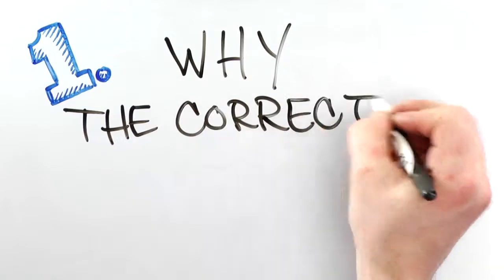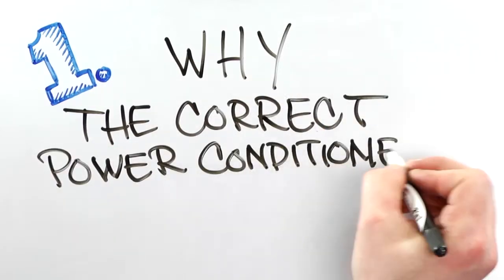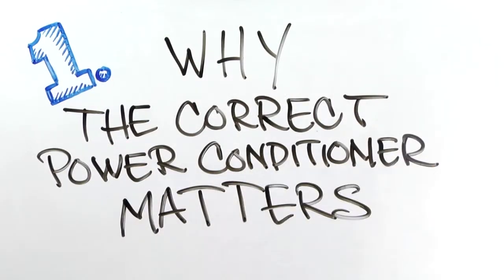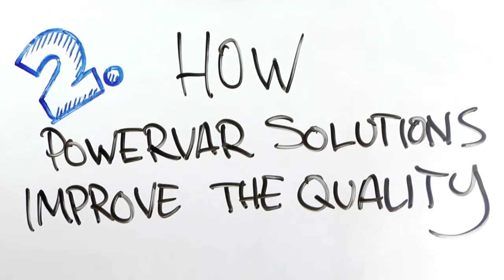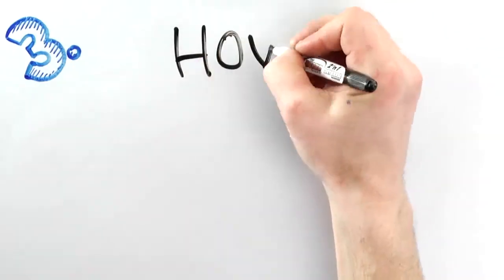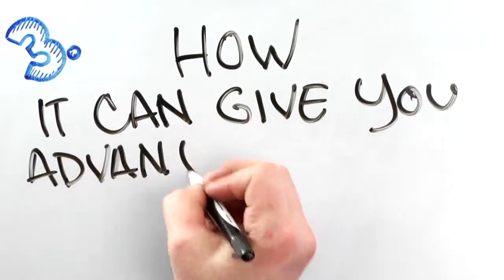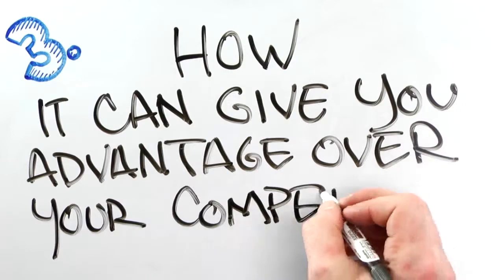Why the correct power conditioner or UPS installed between your industrial automation equipment and the wall matters. How PowerVar solutions can improve the quality of electrical power and how it can impact the customer experience, giving you an advantage over your competition.